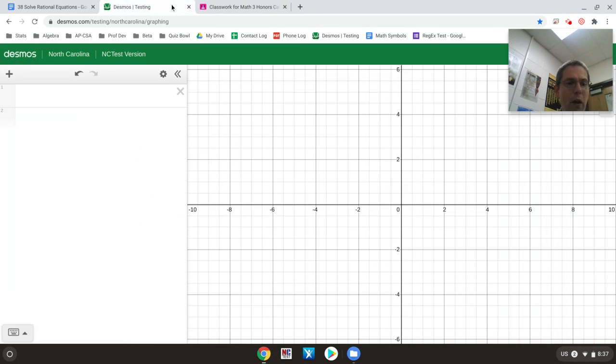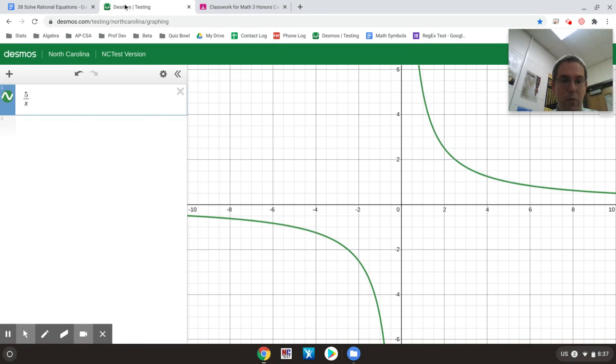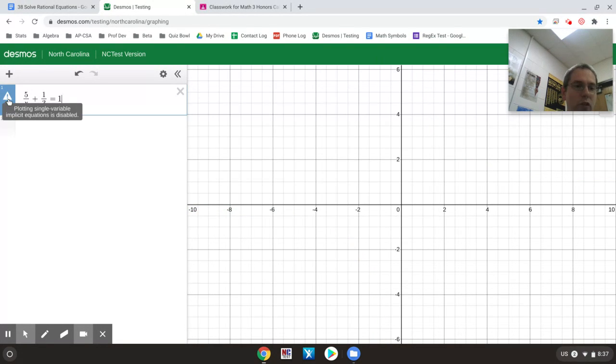So what I would do is I would start with my left-hand side of the equation exactly as is, x over 5 plus 1 third, and then it's equal to 1. Now notice if I do an equal, if you're in the testing version of Desmos, it gives you a little triangle with an exclamation point. That's letting you know it cannot handle what you just did.